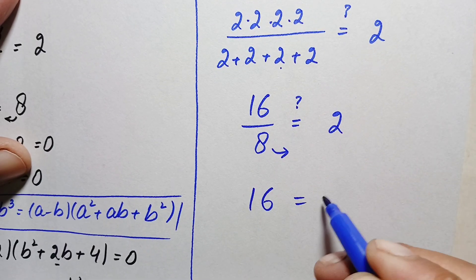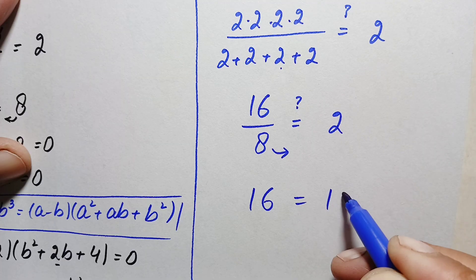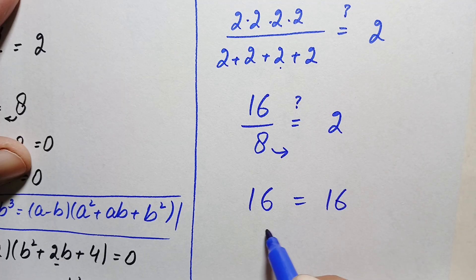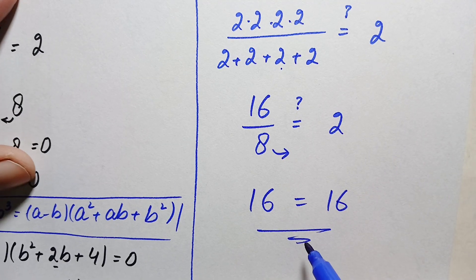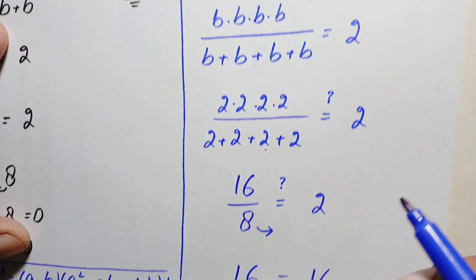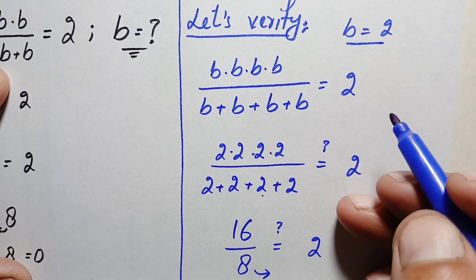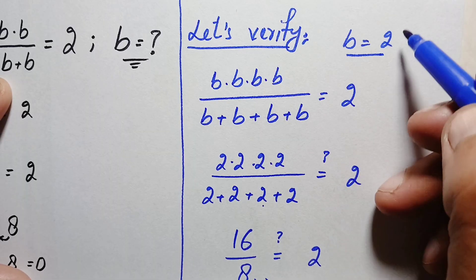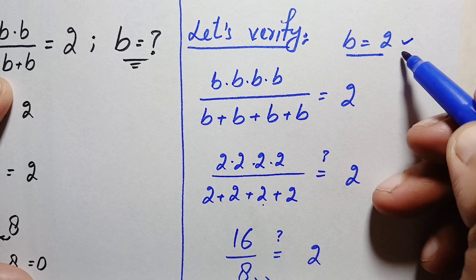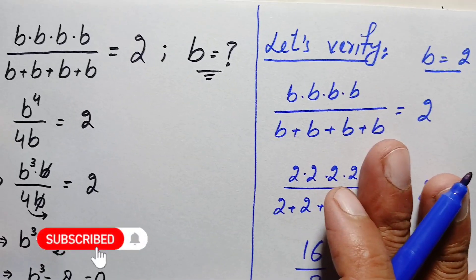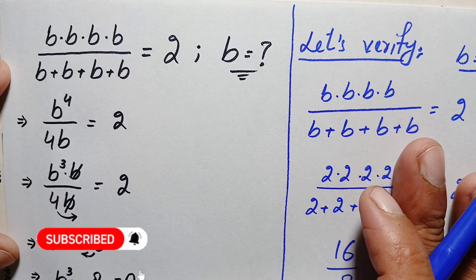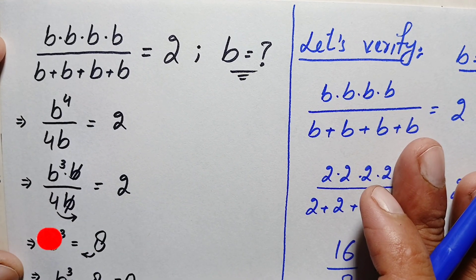Since both sides are equal, this confirms that b equals 2 is the exact and correct solution of this interesting exponential math problem.